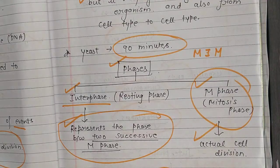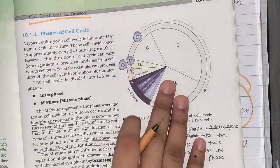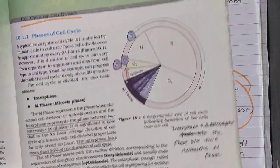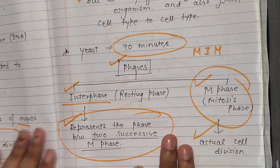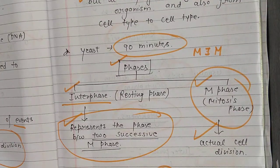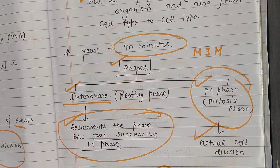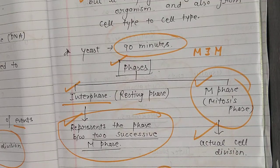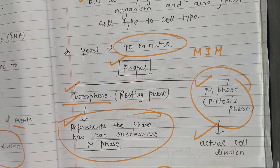So this is the diagram. Many people are confused about this diagram, but it's very easy to remember. Now, the cell cycle mainly has two phases: Interphase and the M phase. Interphase is the preparatory or resting phase where the cell prepares to divide, and the actual cell division happens in the M phase, meaning the mitosis phase.